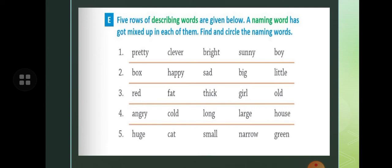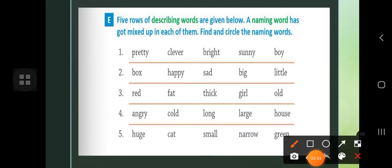Like here it is given that pretty, clever, bright, sunny, boy. So what is the naming word? You will write pretty boy, clever boy, bright - bright means bright sun, sunny, sunny is adjective. So here the naming word is boy. You will circle the boy.